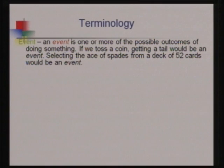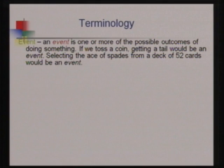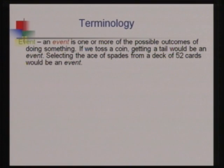After defining probability, let us understand the definition of an event. An event is a possible outcome of an activity. For example, if we toss a coin, either a head or a tail will appear. The appearance of a head is an event, and the appearance of a tail is also an event associated with the activity of tossing a coin.